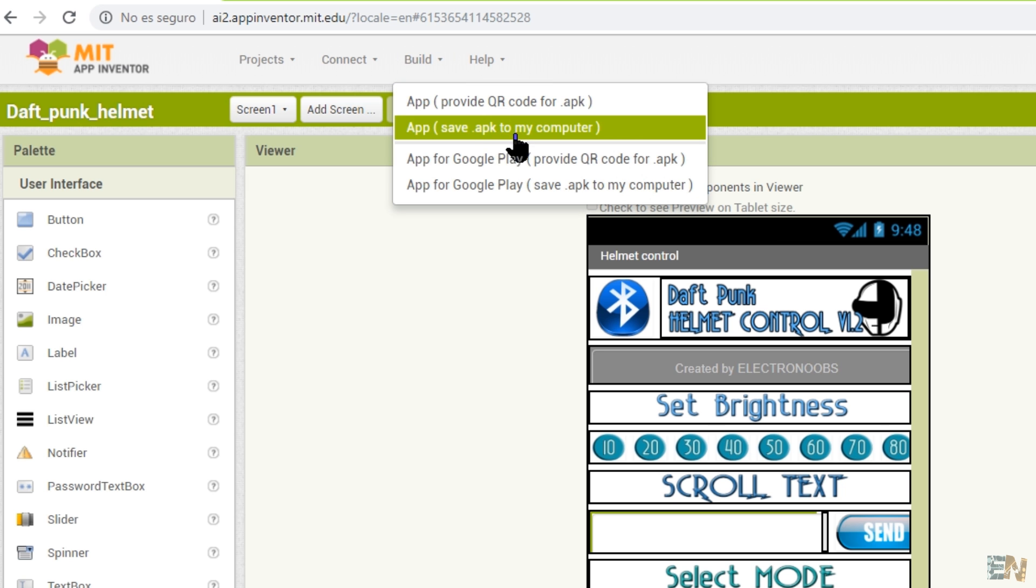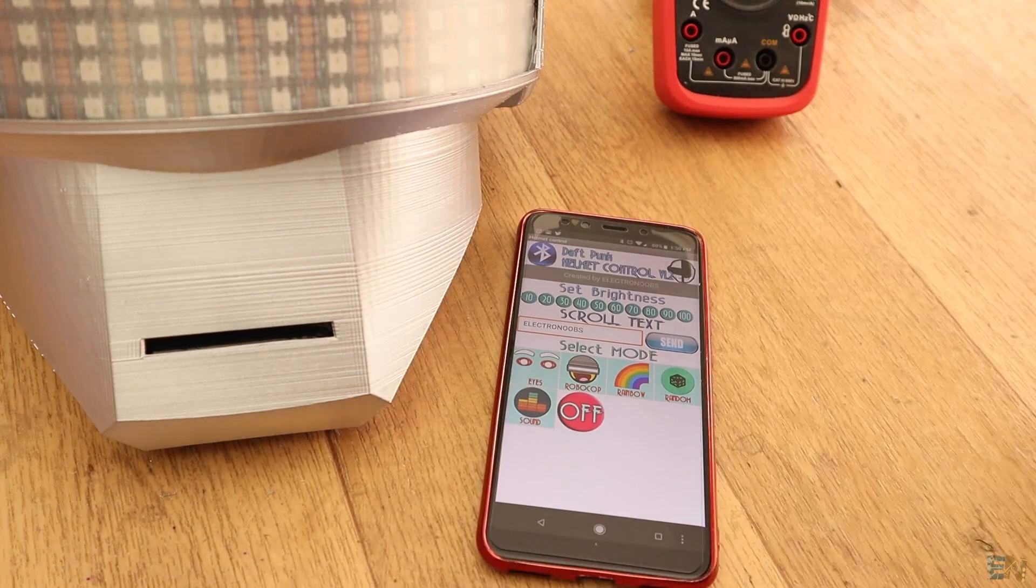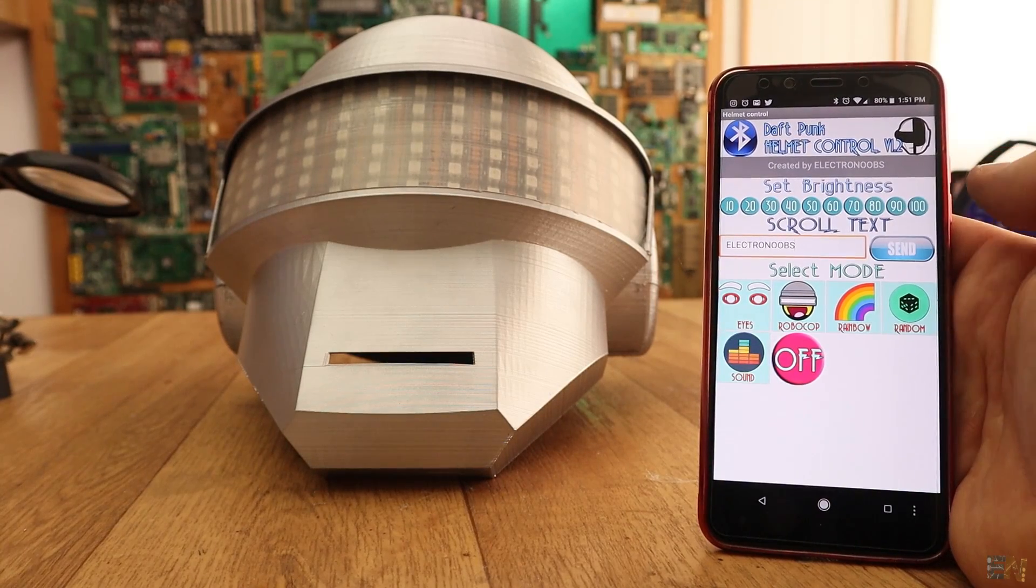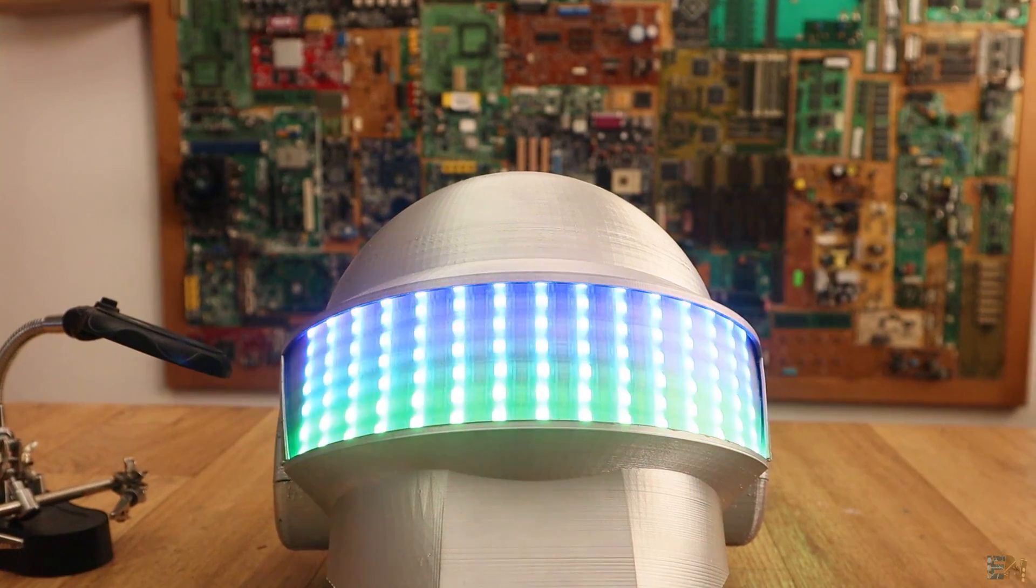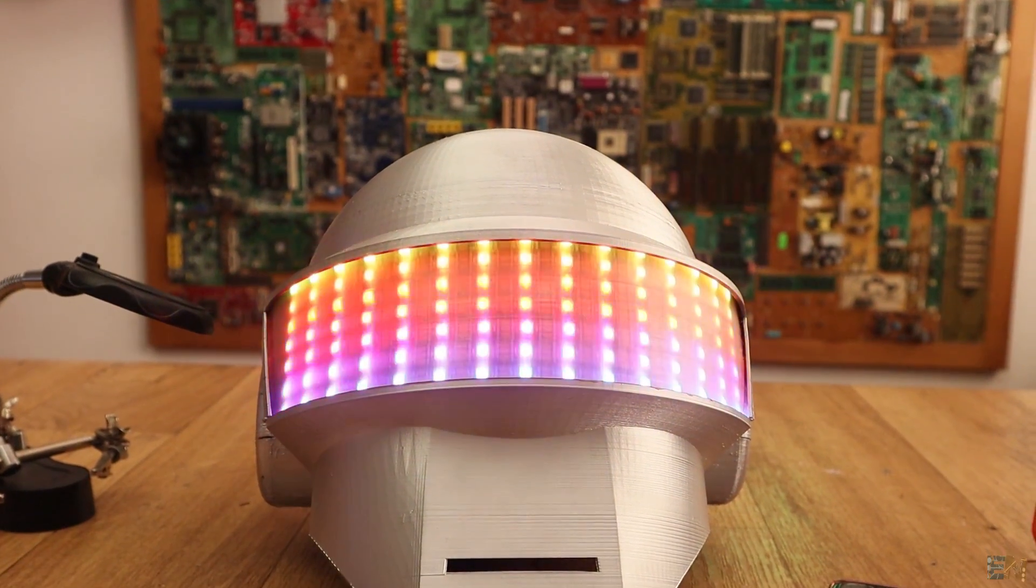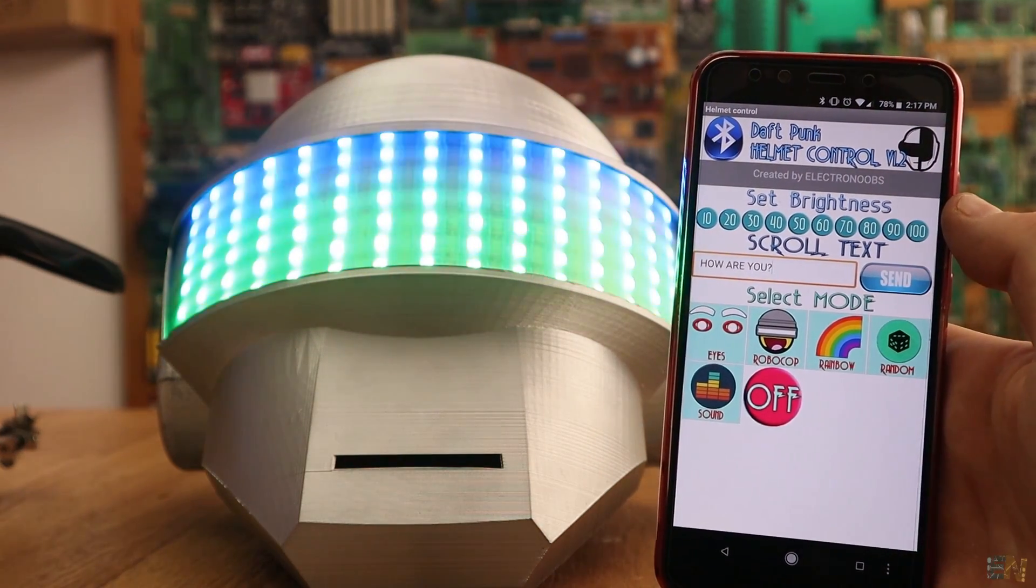And that's it, I save the app and copy it to my smartphone. You have the schematic, the code and this app below ready for download, in case you want to make this same project. You will also find some example codes separately with scrolling text, rainbow colors and so on without the Bluetooth connection, just in case you want to use this for other projects.